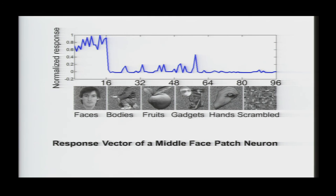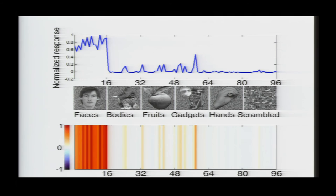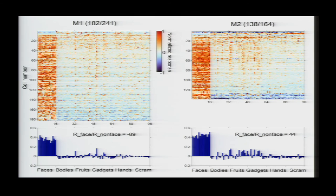So, this is the response profile of the neuron that you just heard, and here the first 16 images are of the faces, and we can represent this by the series of colored bars, with red indicating excitation and blue indicating suppression, and here you can see the response profiles of all of the visually responsive neurons that we recorded from the middle face patch of two monkeys, and you can see at a glance that almost all of the cells were face-selective.